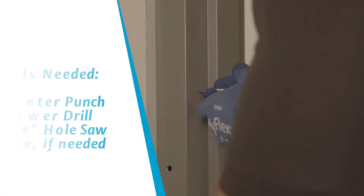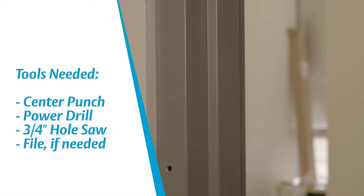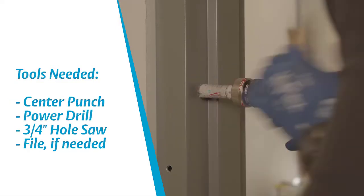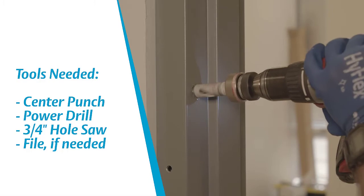We're going to start by installing the magnetic switch in the frame. Use a center punch to mark the frame, then drill a hole using a 3/4 inch hole saw.